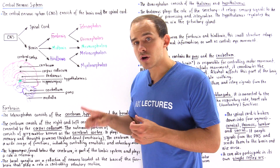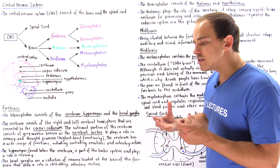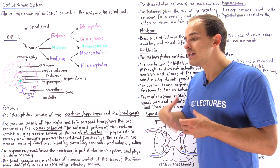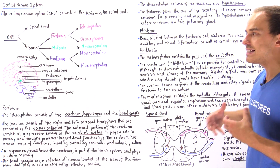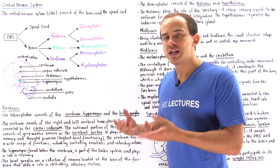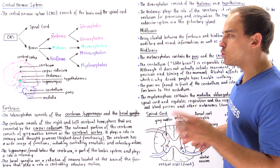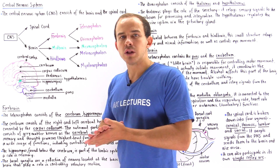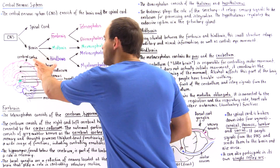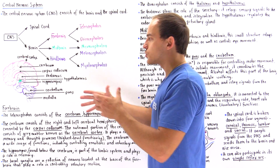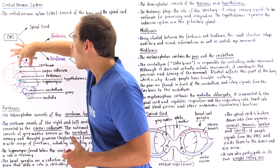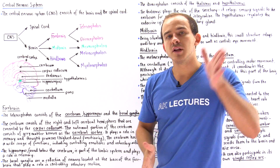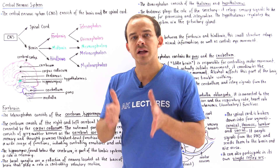The cerebrum is the structure of the forebrain that basically makes us human. It gives us the ability to think, to reason, and provides logic and intuition. It also gives us the ability to control our emotions and feelings and to control our voluntary actions. The cerebrum is a large structure that consists of the left and the right cerebral hemispheres.